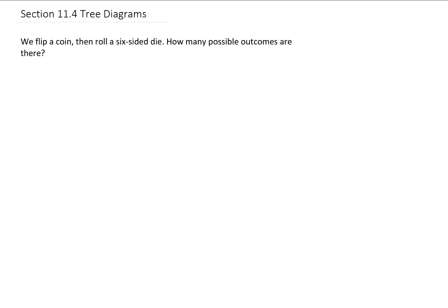We're going to flip a coin and then roll a six-sided die. We want to know how many possible outcomes there are. So we have two events: one is flipping a coin, and the second event is rolling a six-sided die.